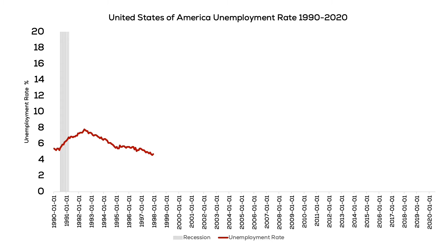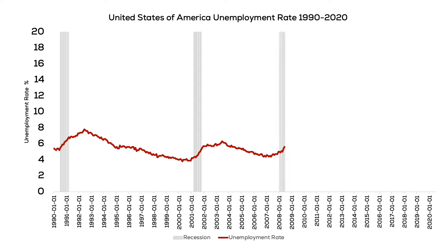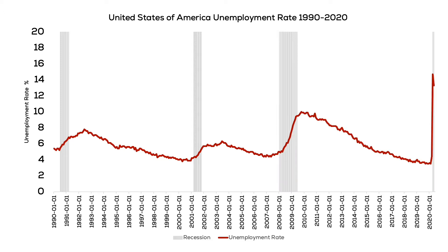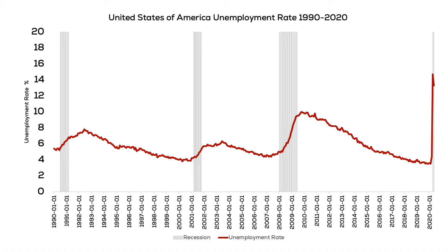If you look at the United States unemployment rate from 1990 to 2020, you will see that it hovers usually around five percent. In this graph we see a big spike in 2020 as we entered the recession that was introduced by COVID-19. We also see a big spike in 2009 around the Great Recession.